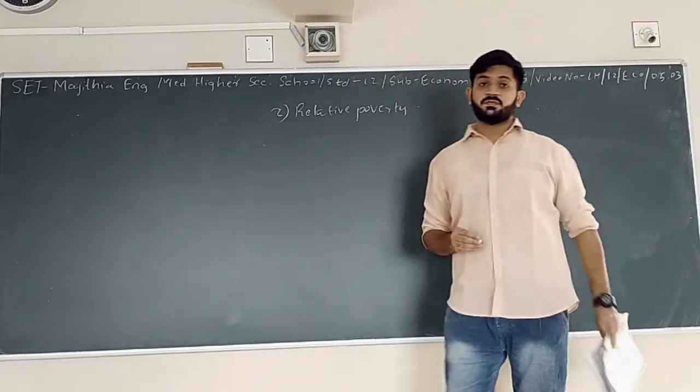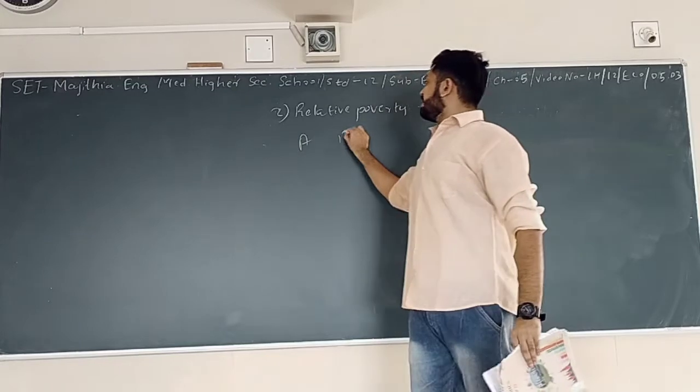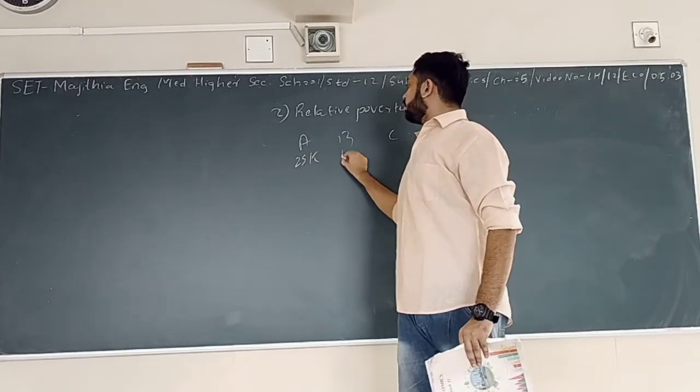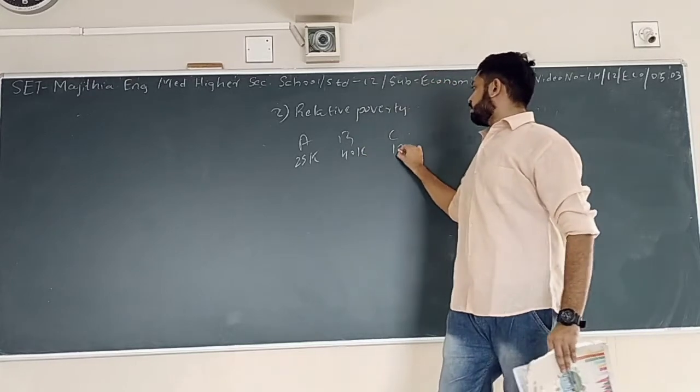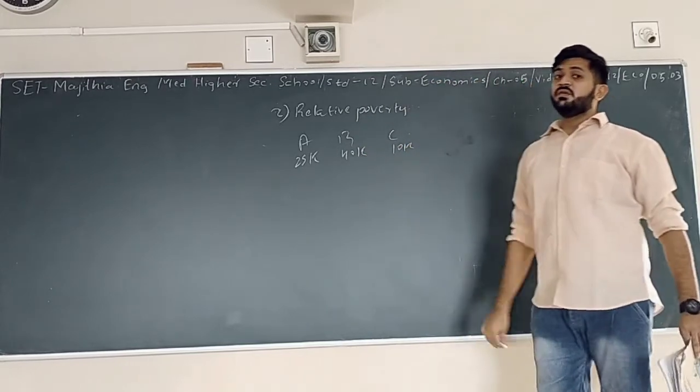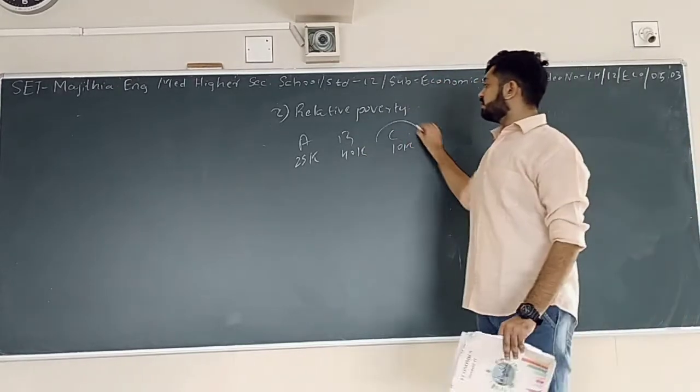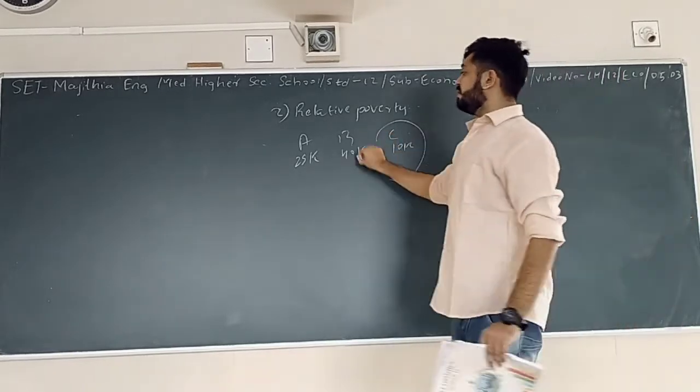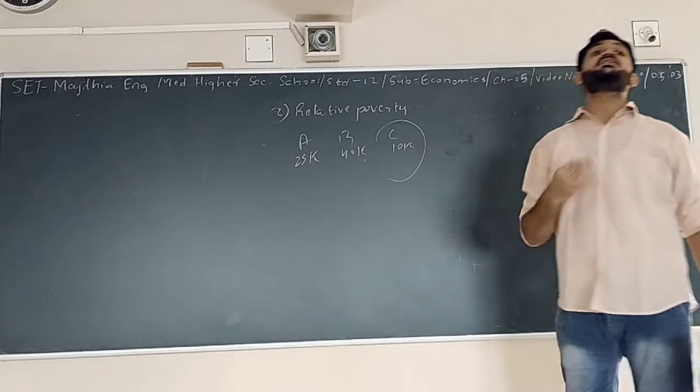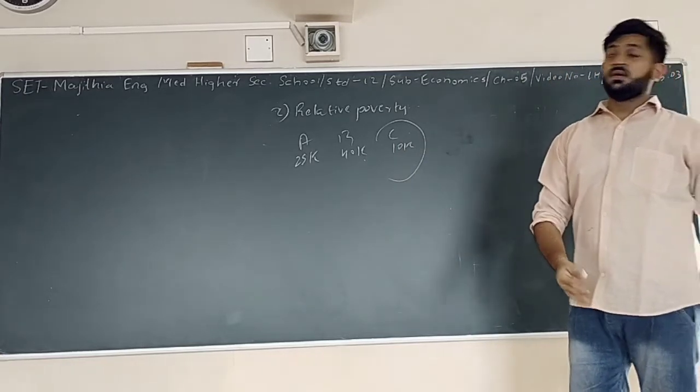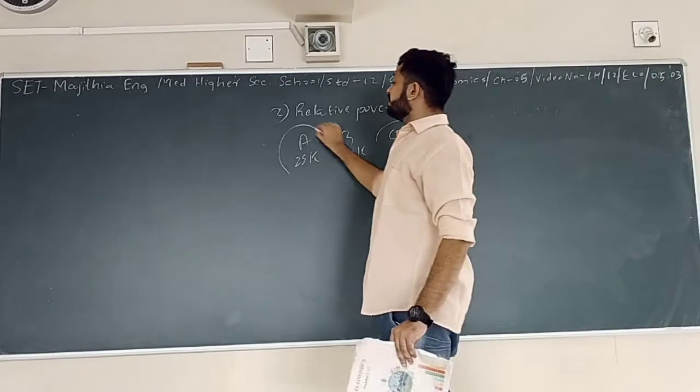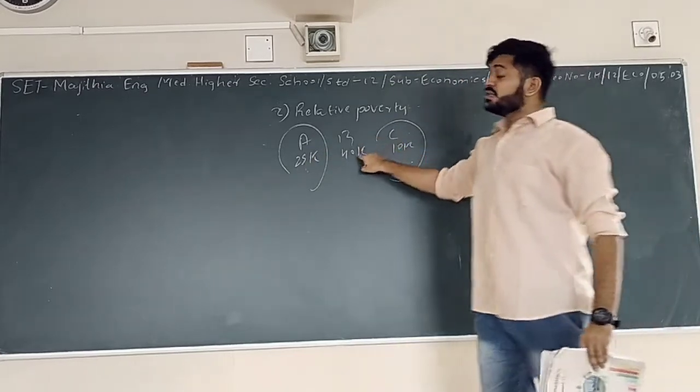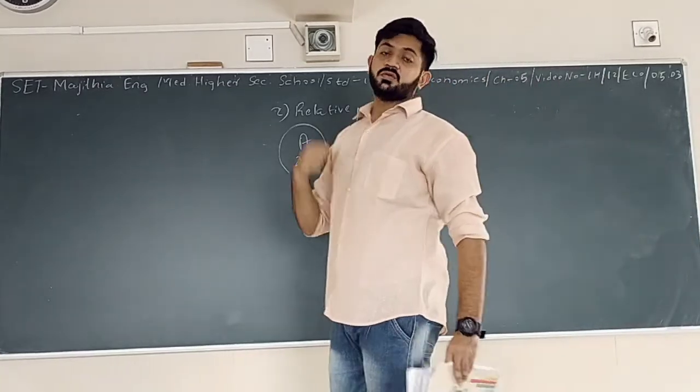There are three persons, A, B and C. A earns 25,000, B earns 140,000, and C earns 110,000. So out of three, which person is poor? Obviously, the person A. Why? Because A's income is less than both B and C. The second is person C. C is richer than A but poorer than B. So this is the difference.